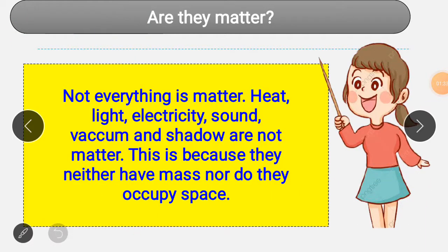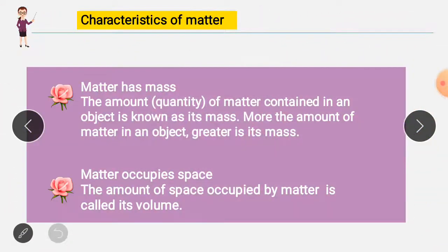Not everything is matter. Heat, light, electricity, sound, vacuum, and shadow are not matter. Why are they not matter? Because of the two properties: they do not have mass, and they do not occupy space. These are the two main reasons they are not considered matter.